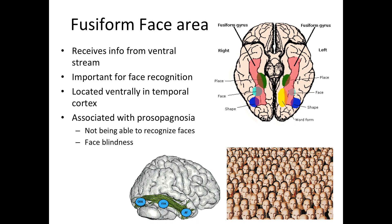The fusiform face area is a very small bilateral part within the fusiform gyrus, located on the ventral side of the brain. If you flip a brain upside down, you can see the fusiform gyrus on both sides shown here in pink, and the fusiform face area shown as a blue dot. This area is really important for face recognition — it lets you differentiate and remember details about someone's face.